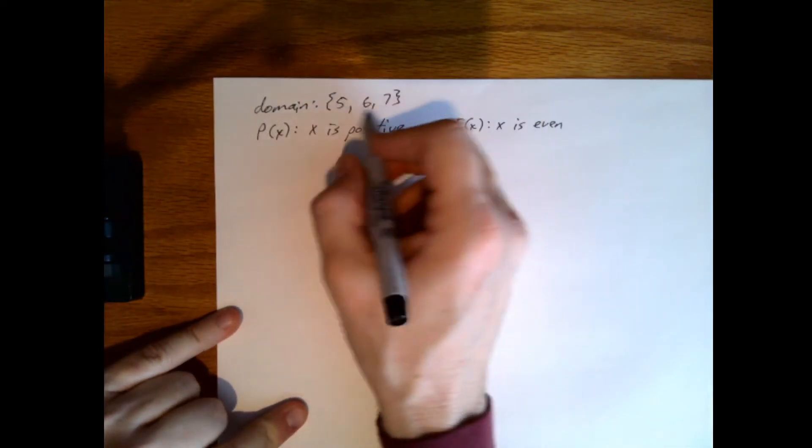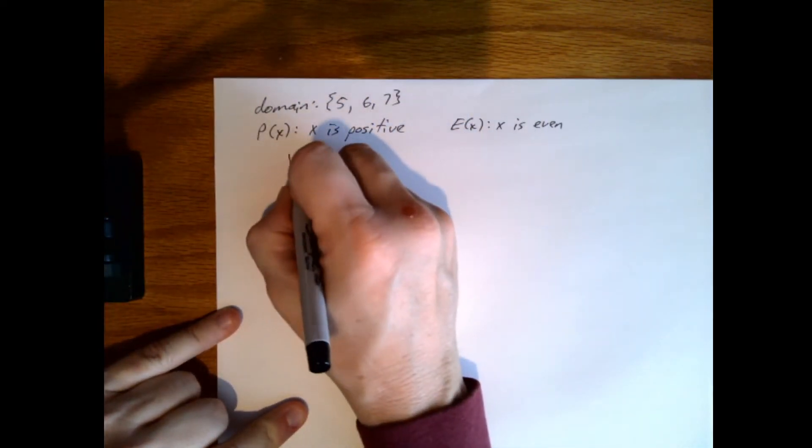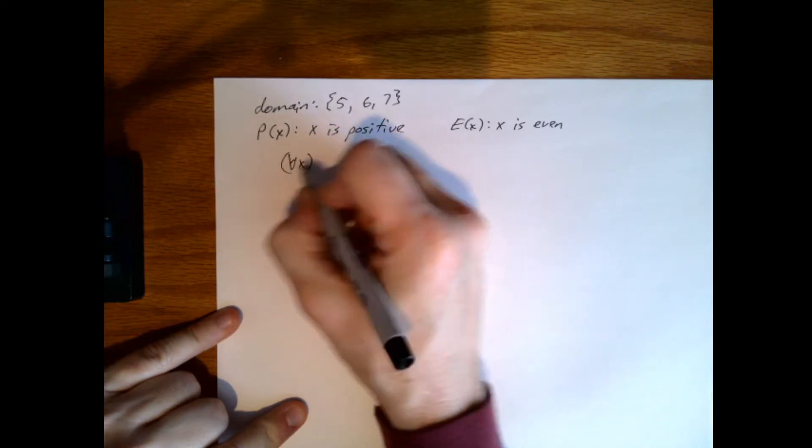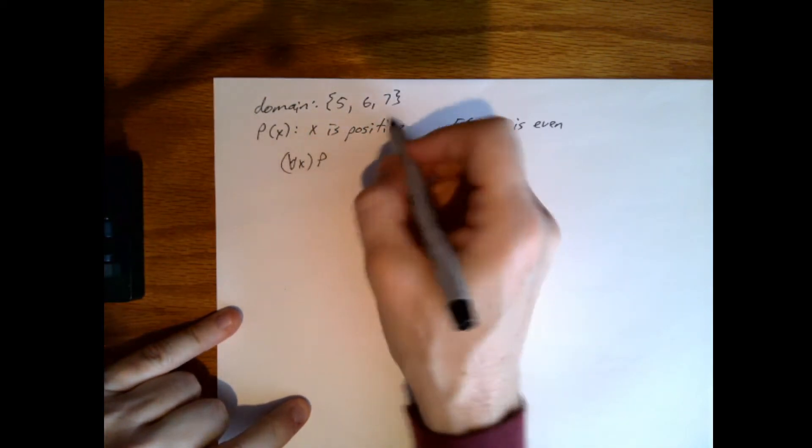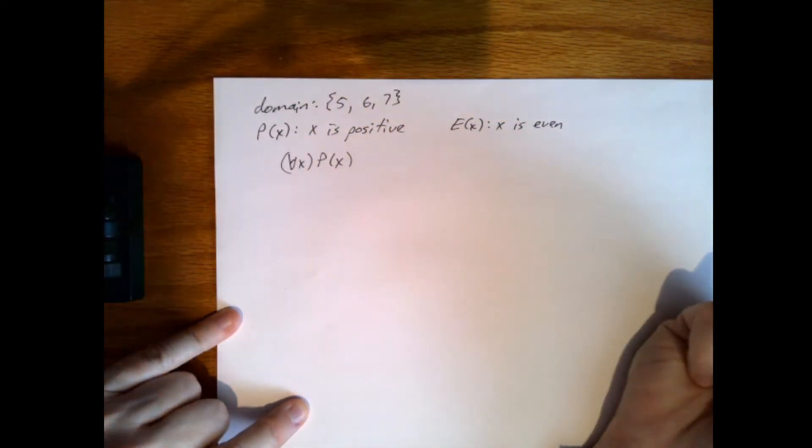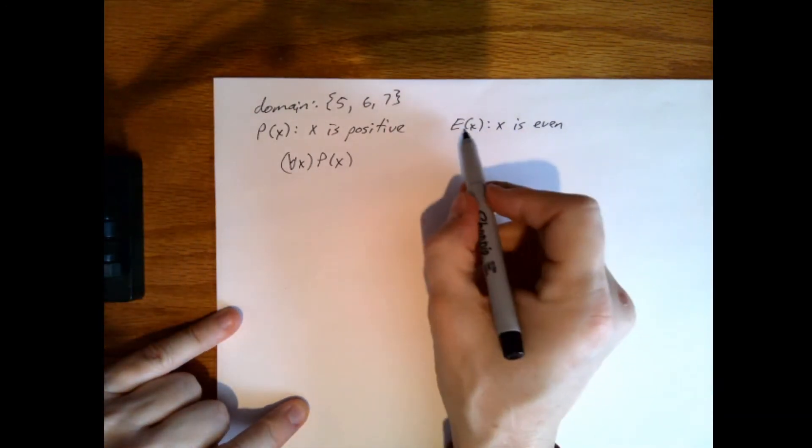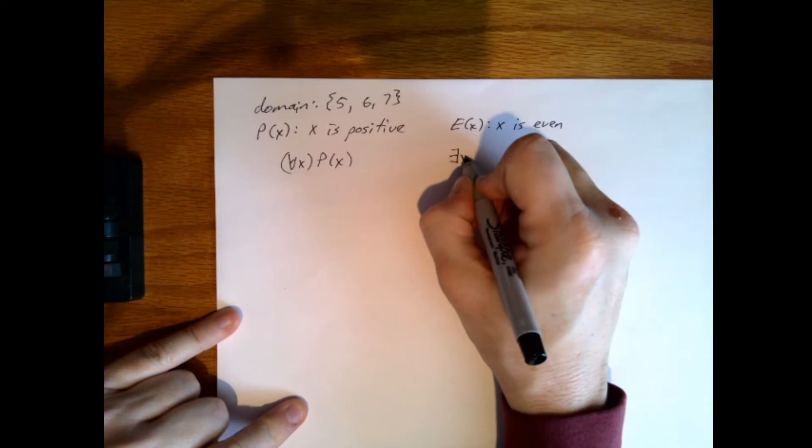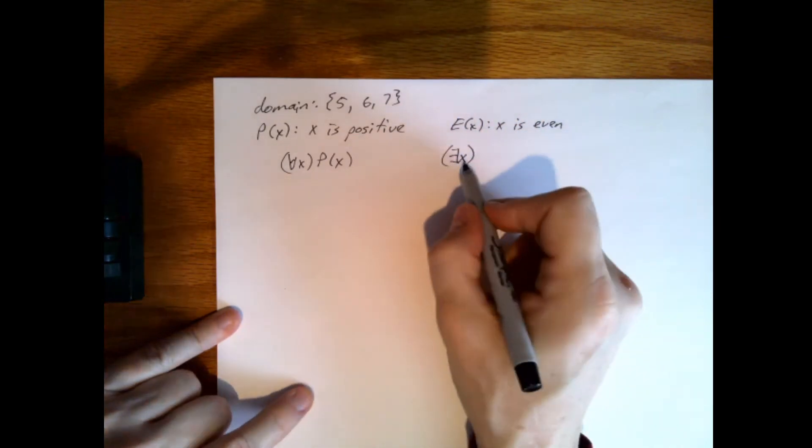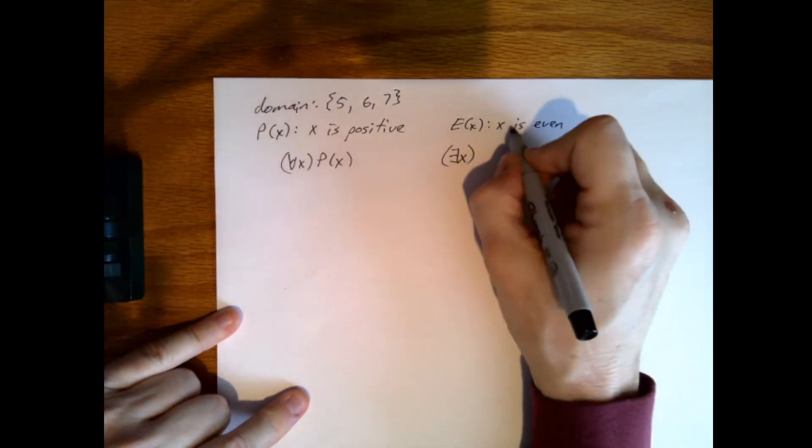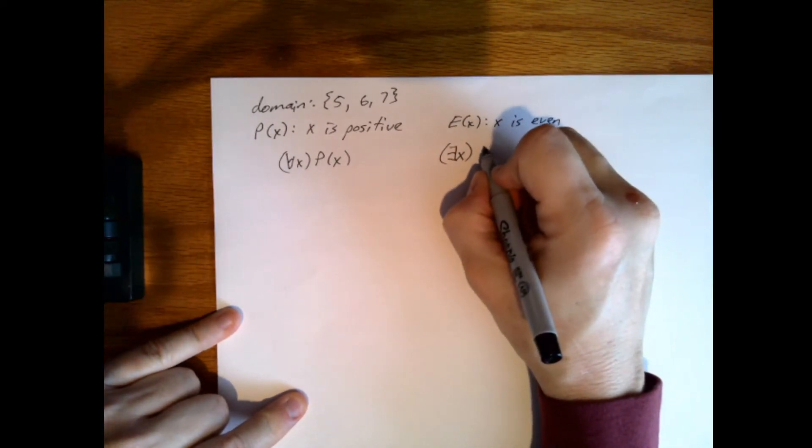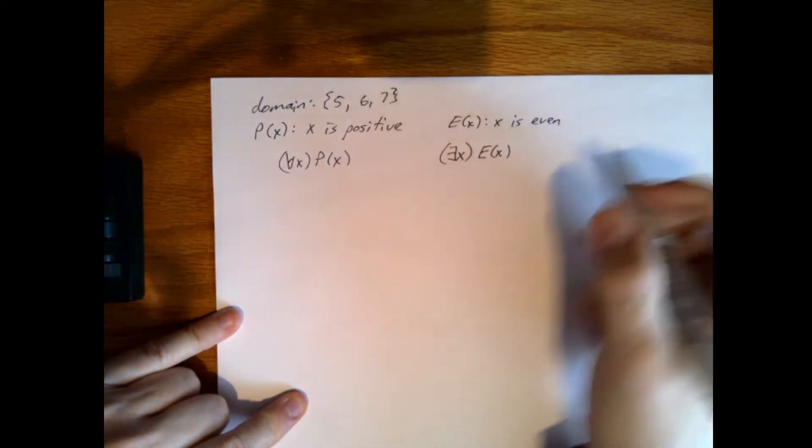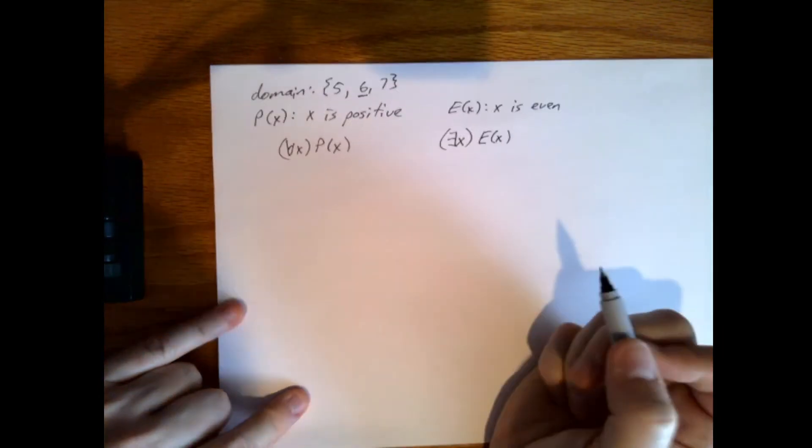And we have P of X means that X is positive and E of X means that X is even. Positive integer and even integer. So it's true, given this domain, that for all X, X is positive. But that's not true here. Here we have, it does exist, or there exists, an X such that X is even. In particular, six here.